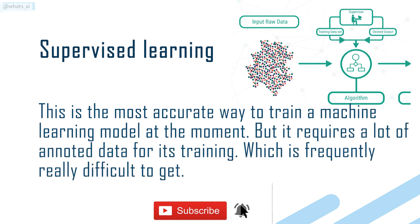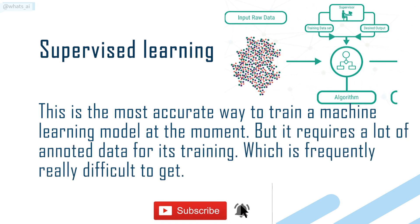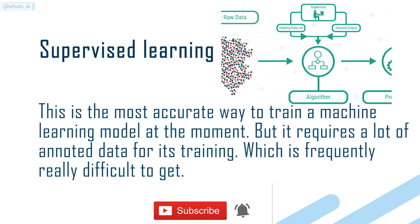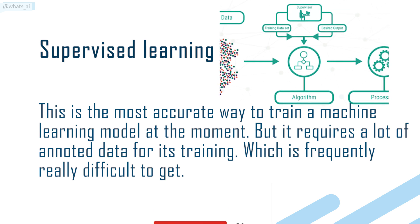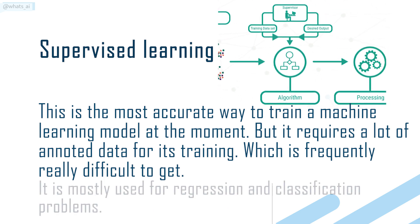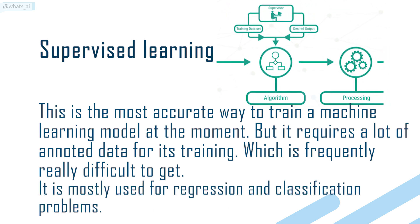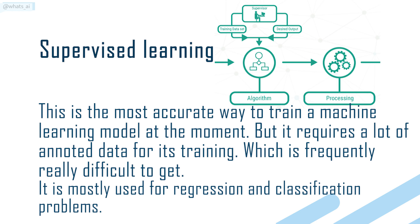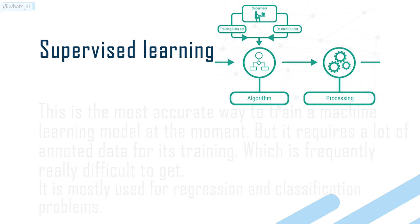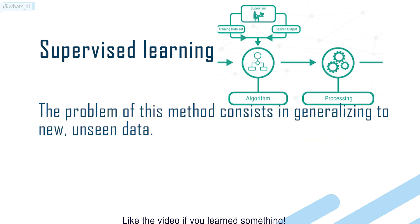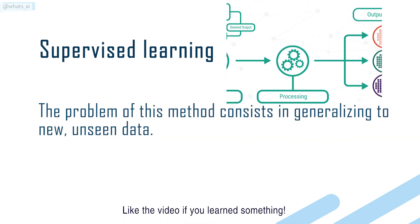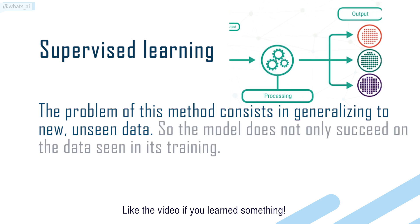But it requires a lot of annotated data for its training, which is frequently really difficult to get. It is mostly used for regression and classification problems. The problem of this method consists in generalizing to new, unseen data.